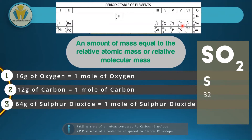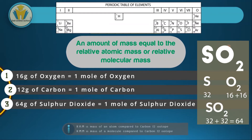Since we have two oxygens, we'll have two 16s. Therefore, 16 plus 16 will be 32. The sulfur was also 32. If we find the sum of 32 and 32, we are going to have 64. Therefore, if we get 64 grams of sulfur dioxide, we have collected one mole of sulfur dioxide.